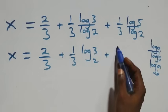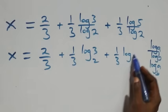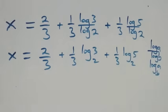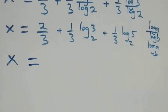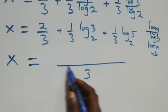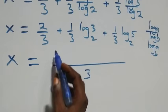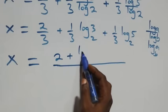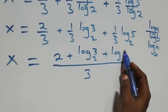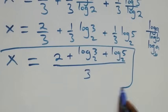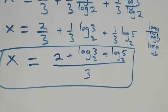Here we have three as the common denominator, so we can write this as x equals two plus log three base two plus log five base two, all over three. So the value of x in this problem is x equals two plus log₂3 plus log₂5, all over three.